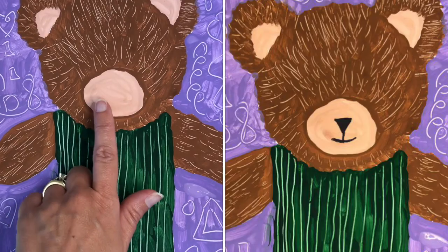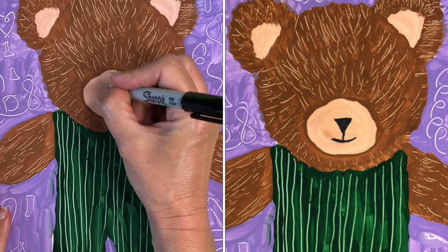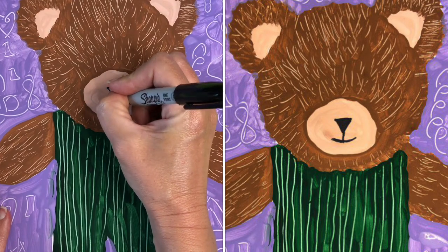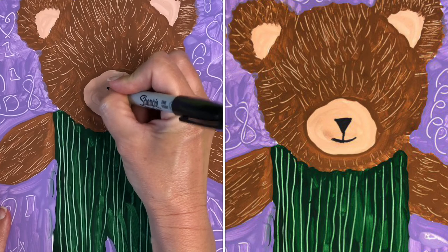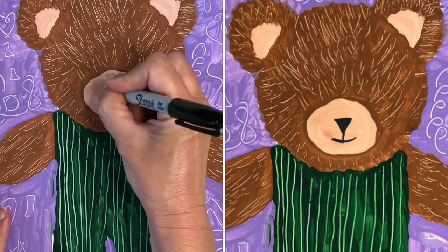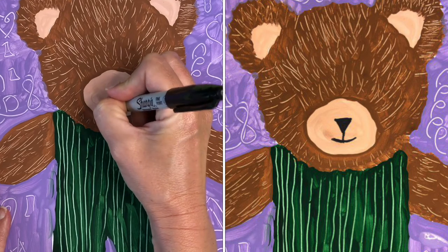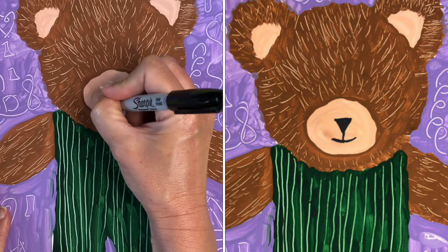Once your painting is all dry, right here, we're going to draw the nose. So I'm going to draw a little triangle nose and you can use a black marker or a crayon to do this. And then I'm going to draw in the mouth.